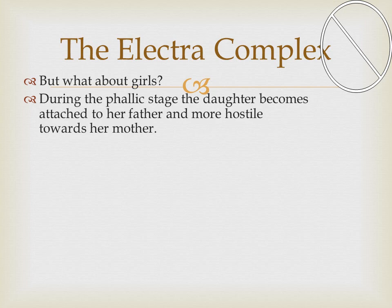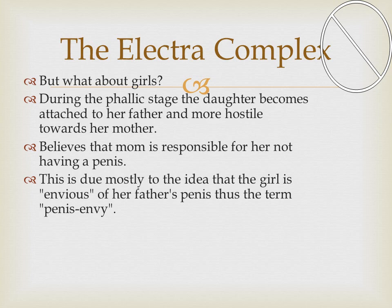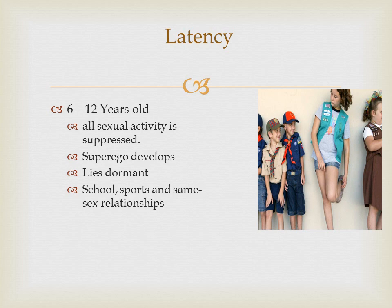Then there's the Electra complex — what about girls during the phallic stage? The daughter becomes attached to her father, more obsessed with dad, and becomes hostile toward her mother. She doesn't want her mom sitting by her dad. She believes her mother is responsible for her not having a penis — this is called penis envy. This leads to resentment toward her mother, who the girl believes caused her castration. Eventually she begins to identify with her mother to avoid being left out.